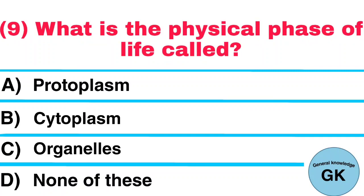Question number 9. What is the physical phase of life called? A. Protoplasm. B. Cytoplasm. C. Organelles. D. None of these. Answer: Protoplasm.